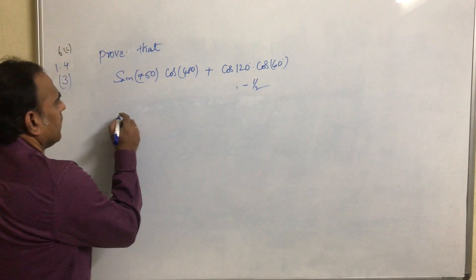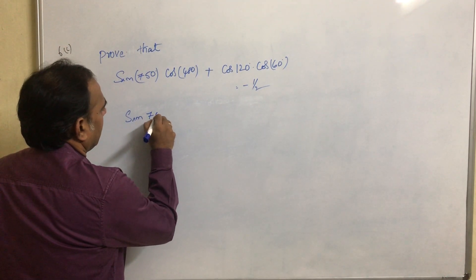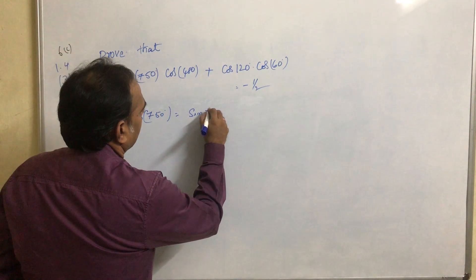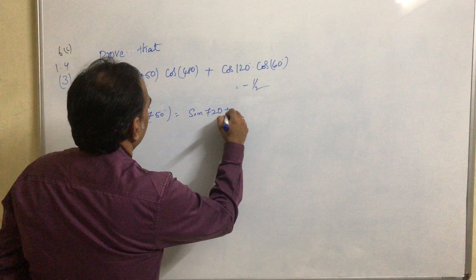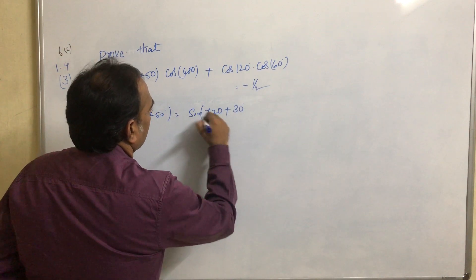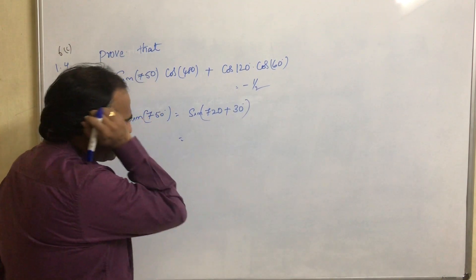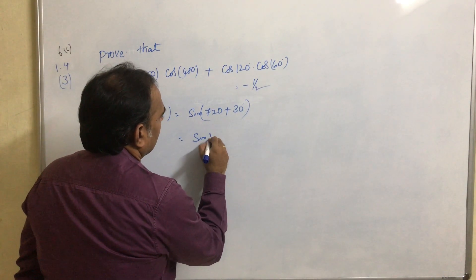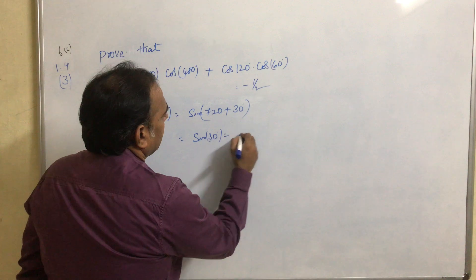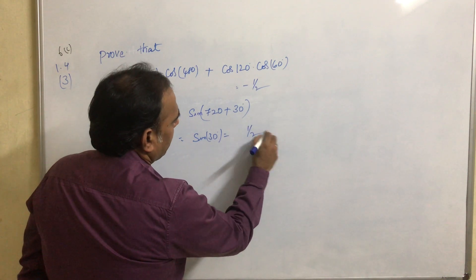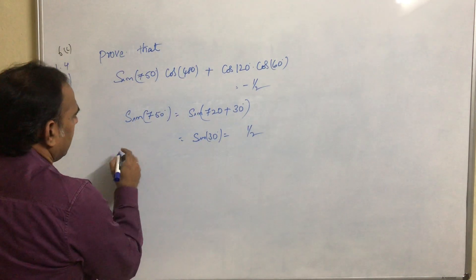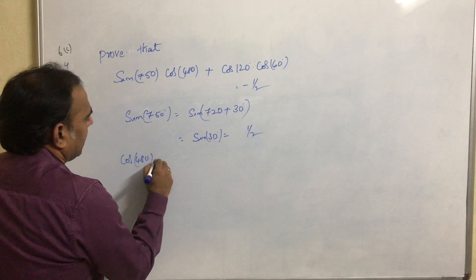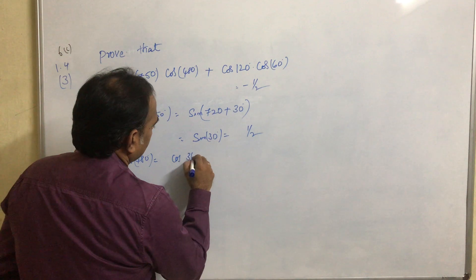Take sin750. 750 can be written as 720 plus 30, so sin(720+30) equals sin30, which equals 1 by 2.